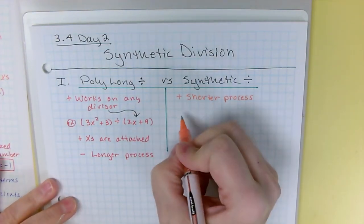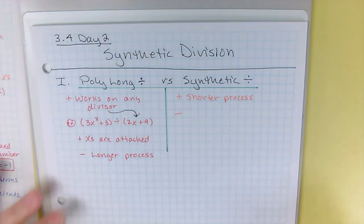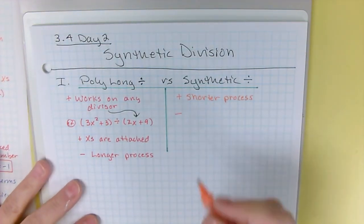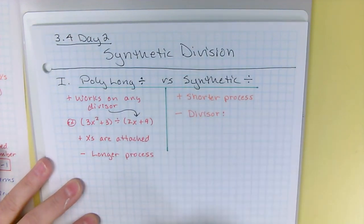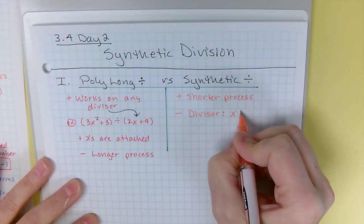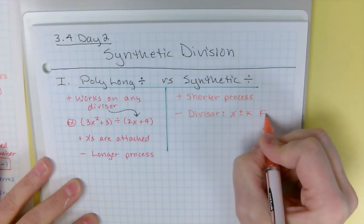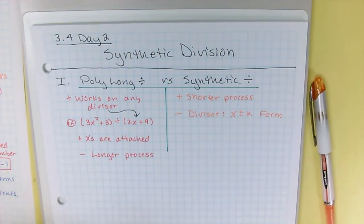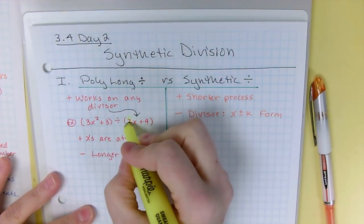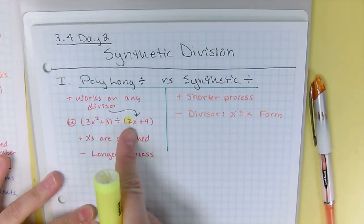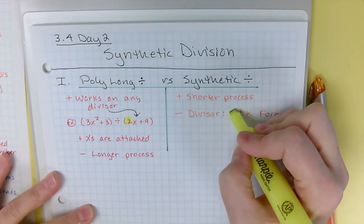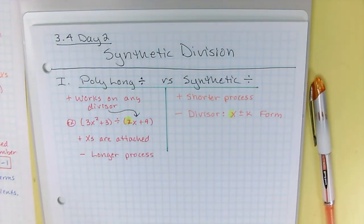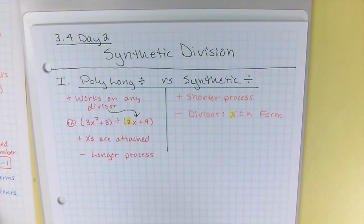One of the downsides to synthetic is that your divisor is limited. Your divisor has to be in the form x plus or minus k. There cannot be a number attached to the x. So like where poly long will work with a 2x + 9, for synthetic, it's got to be a 1x. It can't be anything else. So it's very limited.